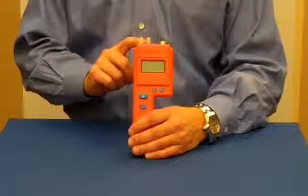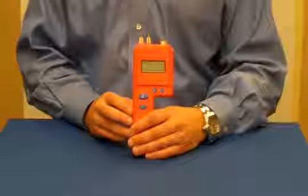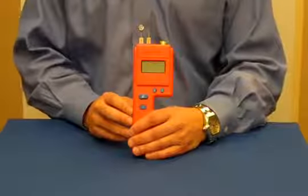It's a pin-type moisture meter that measures moisture content in wood over the range of 6 to 40 percent.